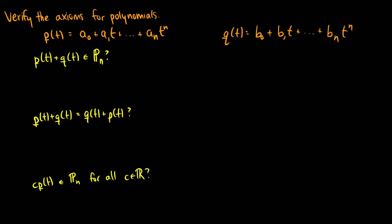p(t) is going to be a_0 plus a_1 t, all the way up to a_n t to the n. And then we're going to add our vector q(t). This is going to be b_0 plus b_1 t,